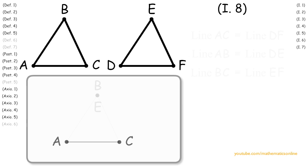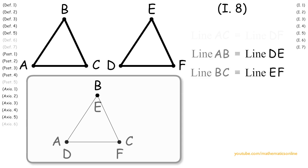So now here's the important step. Since line AC has two lines drawn from both endpoints that meet at point B, and we have a second set of lines DE and EF congruent to lines AB and BC respectively, and coincide at the endpoints A and C, then by Proposition 7, points B and E must coincide.